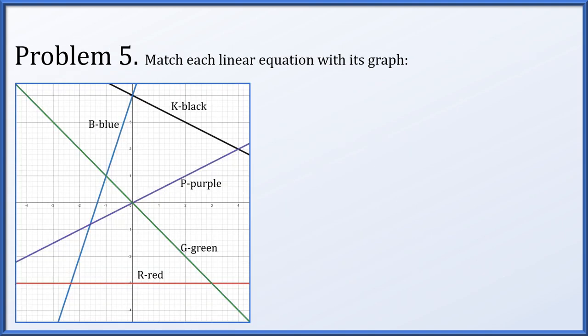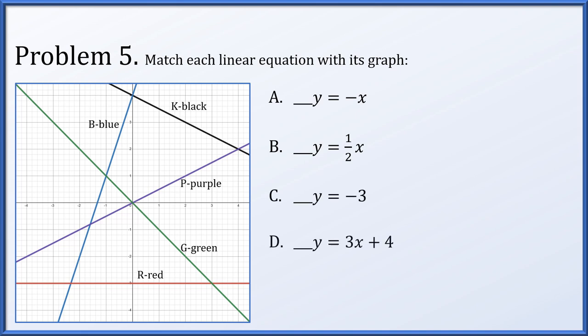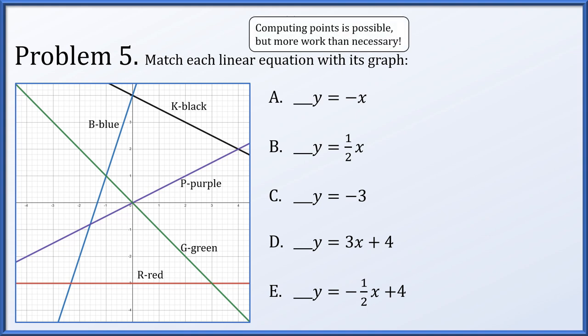For problem five, we have a graph with five lines and must match them to equations: y equals negative x, y equals one half x, y equals negative three, y equals three x plus four, and y equals negative one half x plus four. Rather than plugging in points, let's check whether the slope is positive, negative, or zero, and whether the y-intercept is positive, negative, or zero. That will be enough information to determine which line is which.